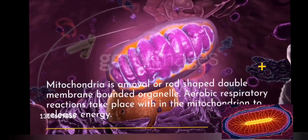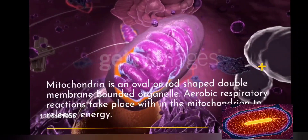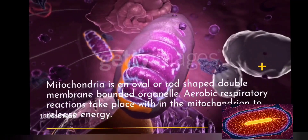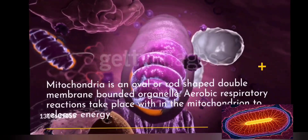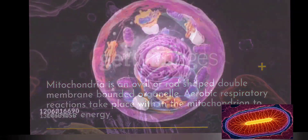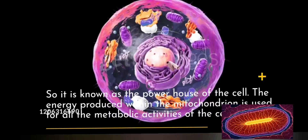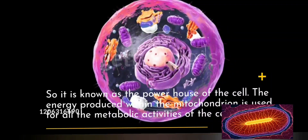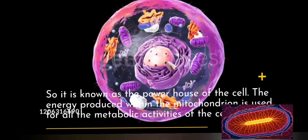Mitochondria is an oval or rod-shaped, double membrane-bounded organelle. Aerobic respiratory reactions take place within the mitochondrion to release energy. It is known as the powerhouse of the cell. The energy produced within the mitochondrion is used for all the metabolic activities of the cell.